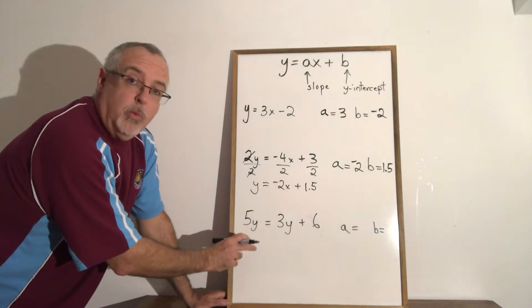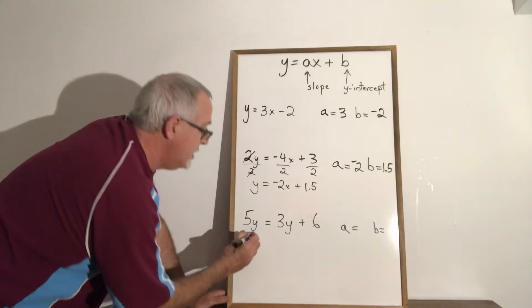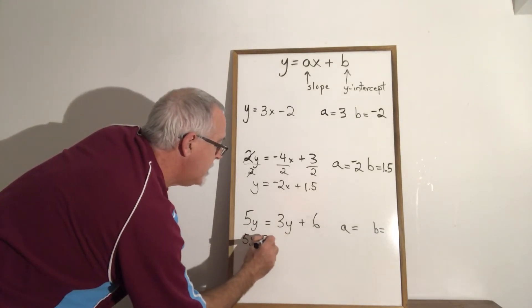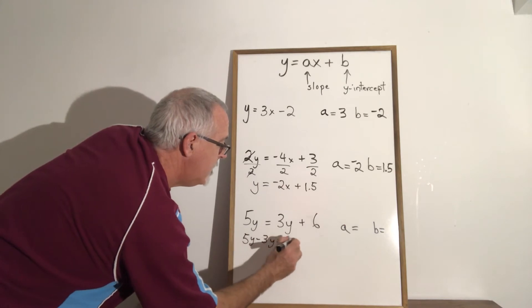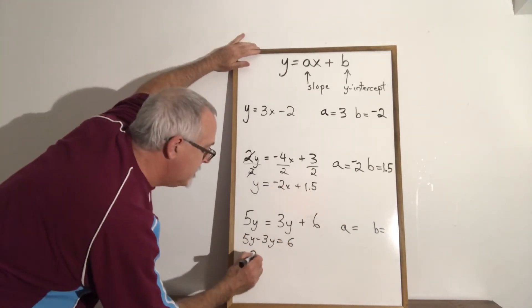In order to isolate our y on the left of the equal sign the first thing I'm going to do is move the three y to the other side where it becomes negative three y and then combining similar terms five y minus three y is two y.